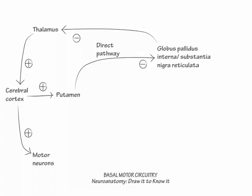For the moment, think about the indirect pathway as being just like the direct pathway, with the only addition of passage through the globus pallidus externa, which adds an additional inhibitory step. Because this creates three inhibitory steps in a row, the sum of the pathway is inhibitory.